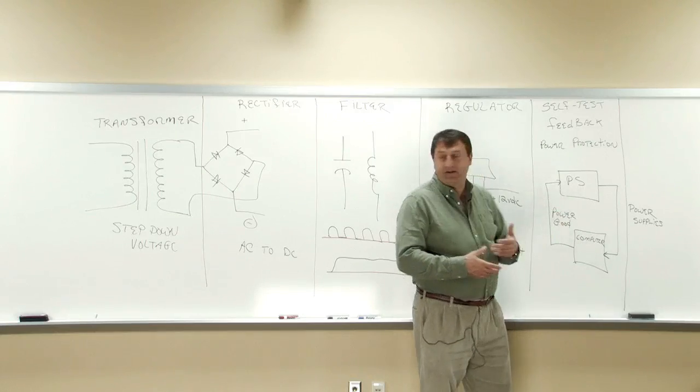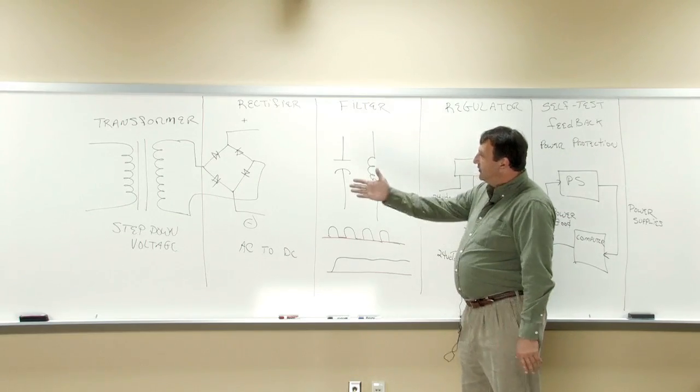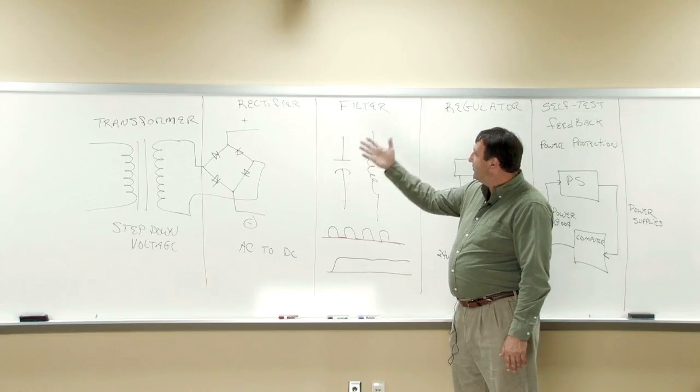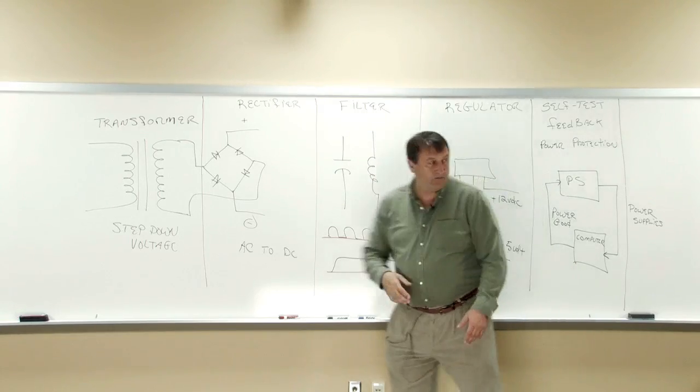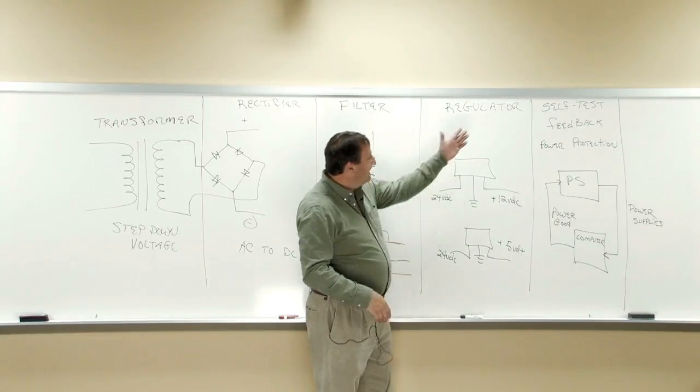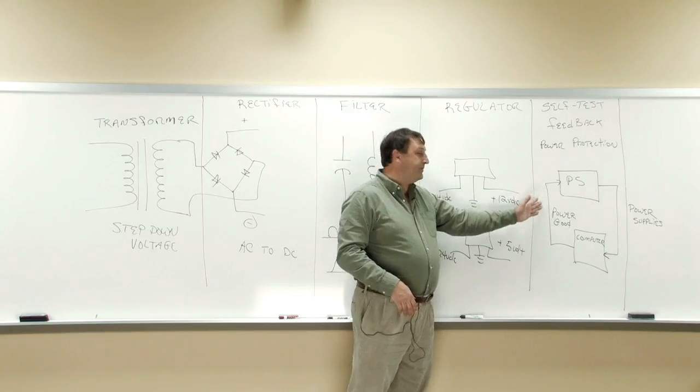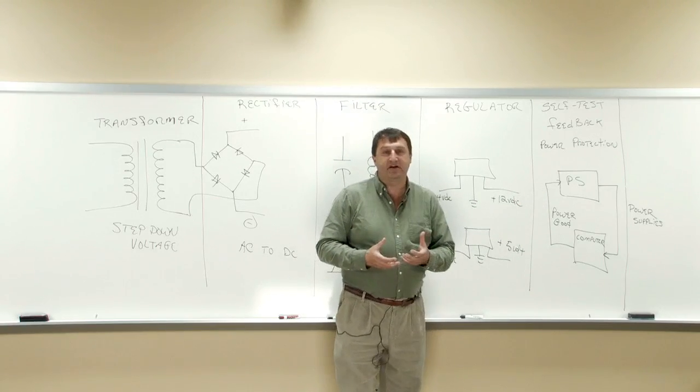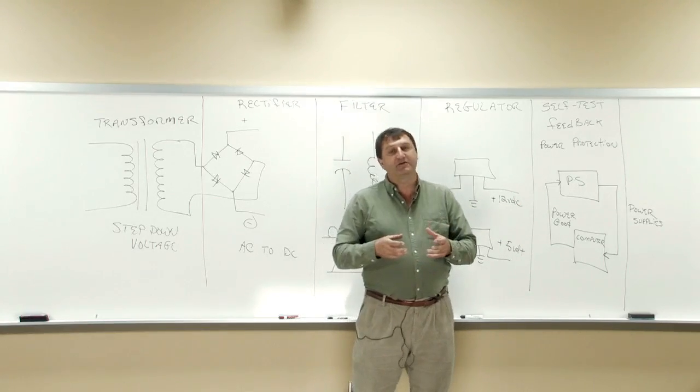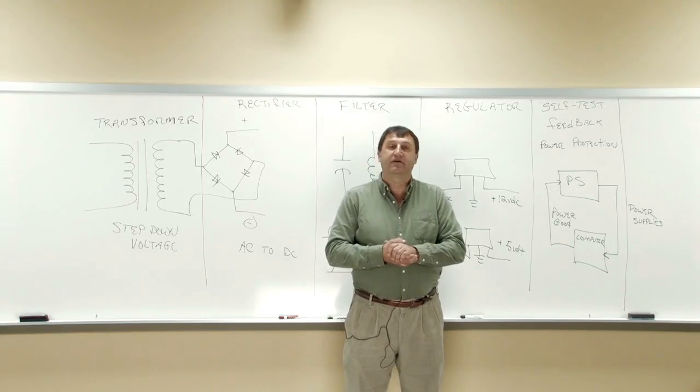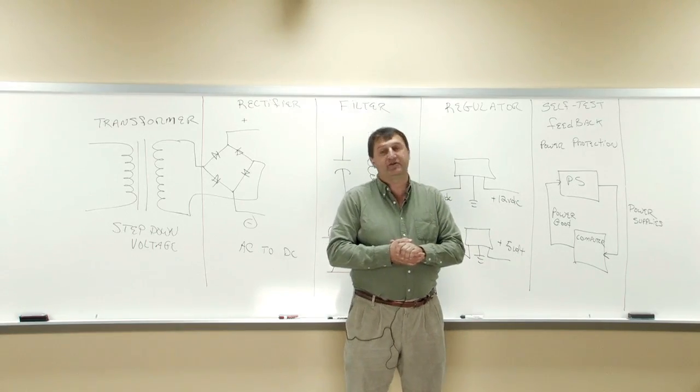This is basically an overview of how power supply works and the different components. So again, four parts. We have a transformer, a rectifier, filter. We come back, we have a regulator and the self-test feedback power protection and that basically makes up the five components of a power supply and how they work. So thank you for joining us for an overview of power supplies.